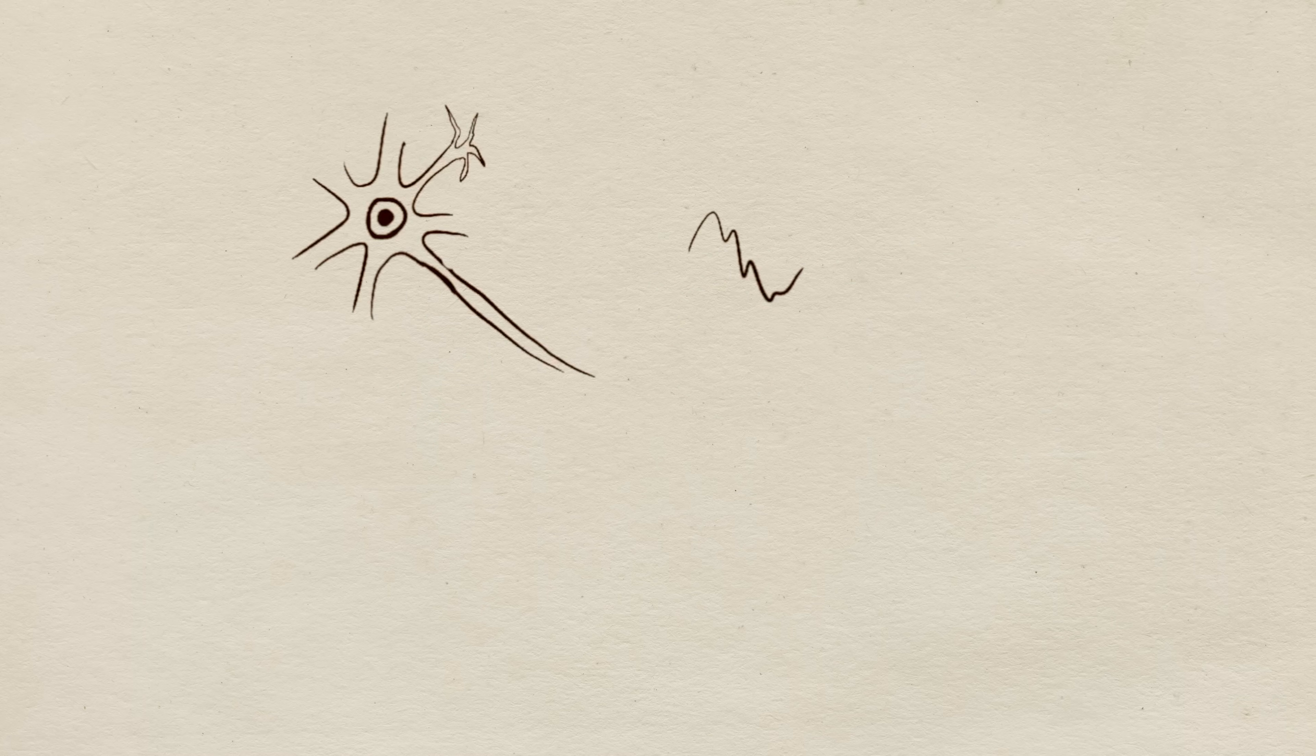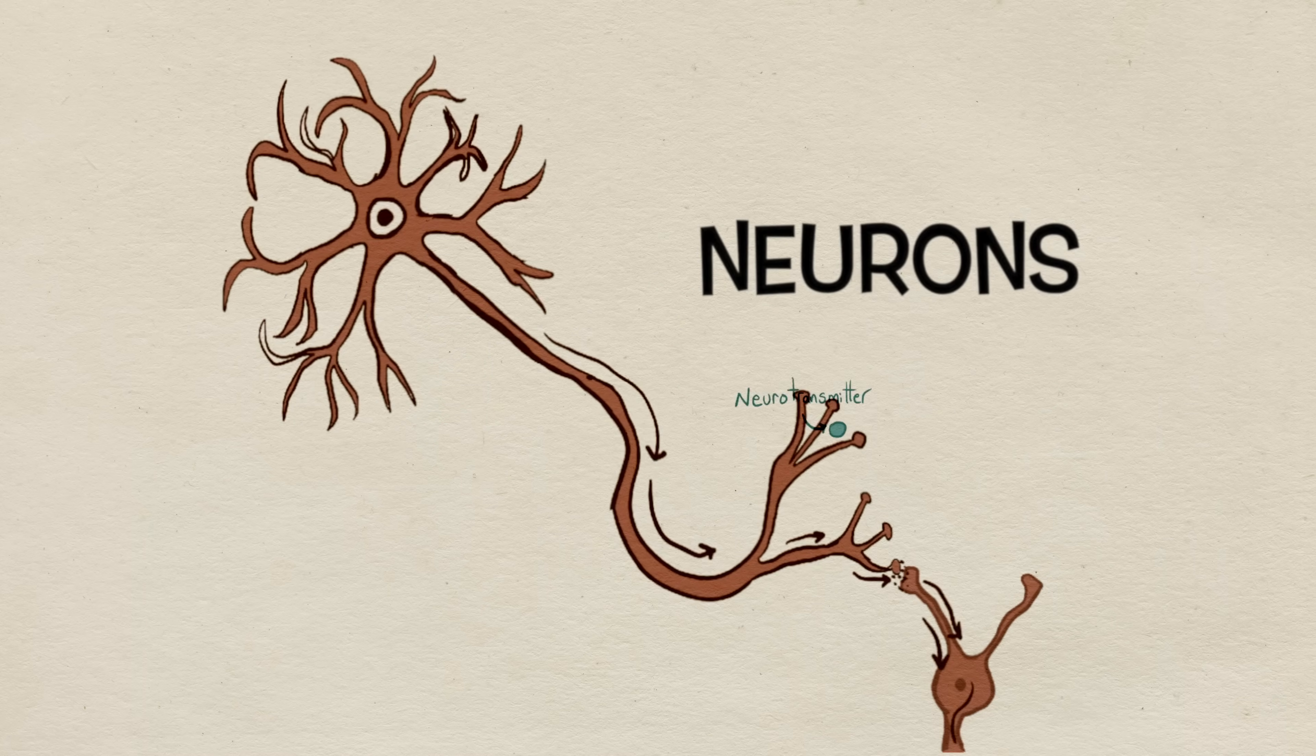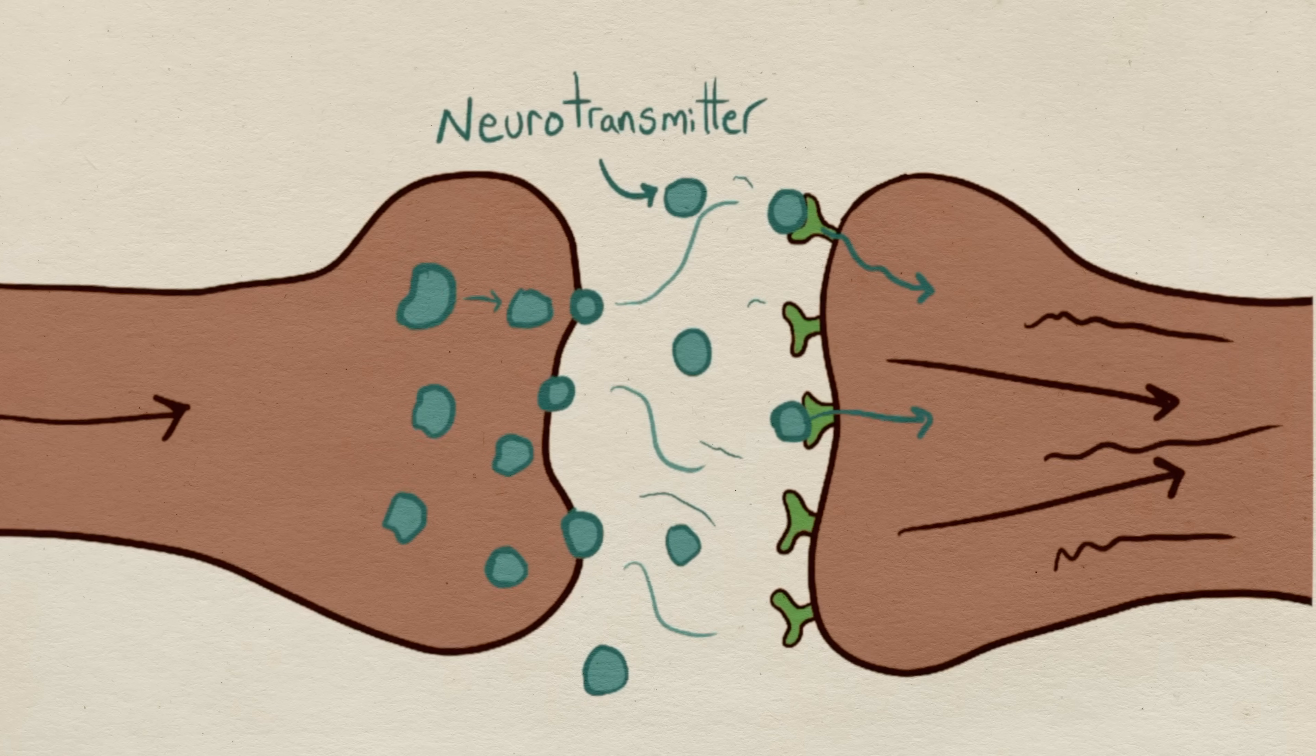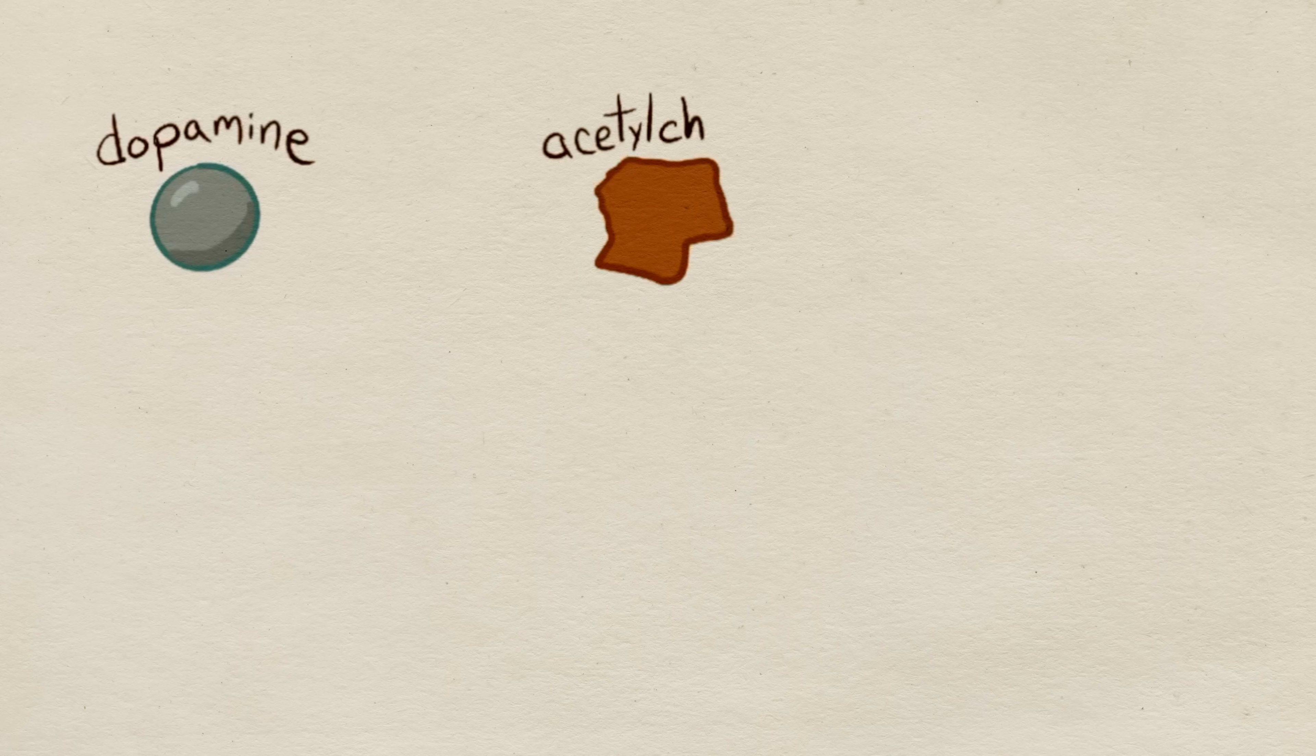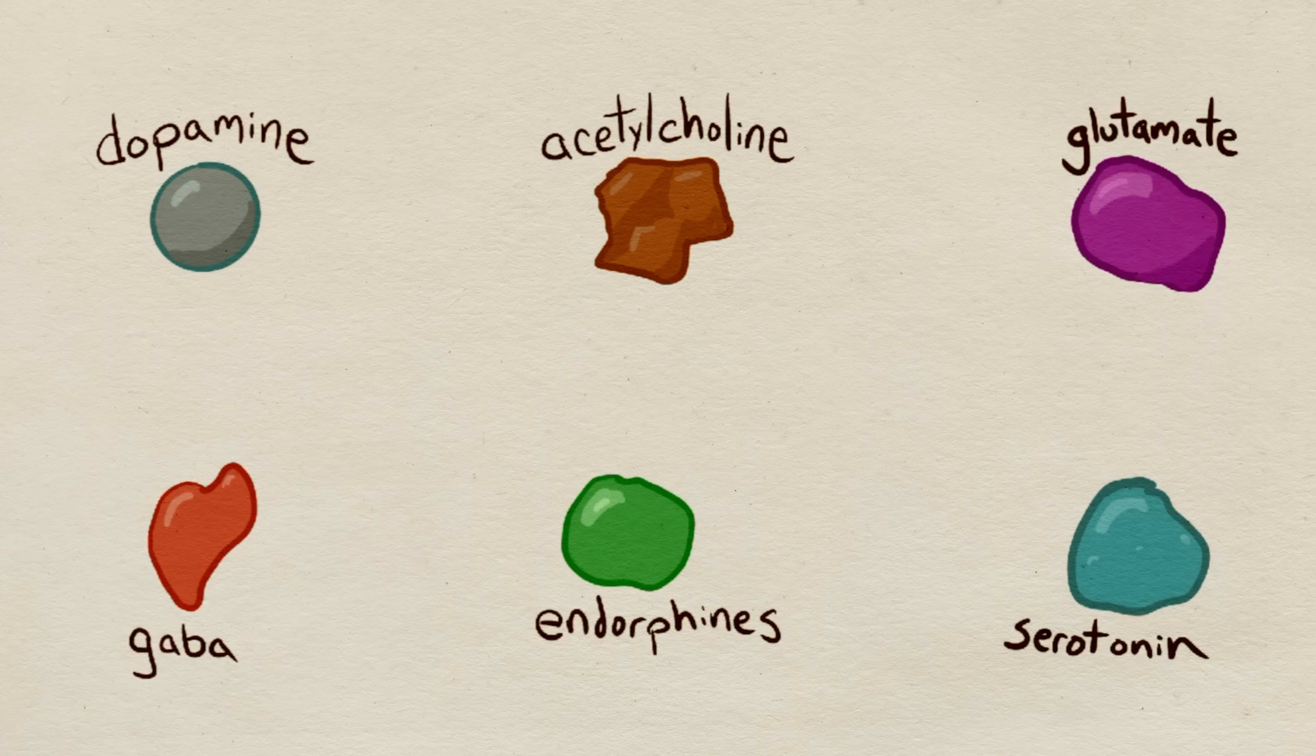Everyone has a nervous system full of neurons. Neurotransmitters carry chemical signals from one neuron to the next target cell, and that could either be another nerve, a muscle cell, or a gland. Common neurotransmitters include dopamine, acetylcholine, glutamate, GABA, endorphins, and serotonin.